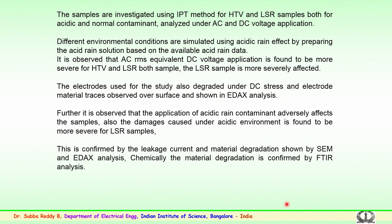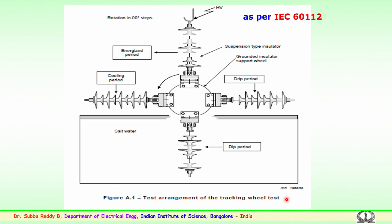This is a very important experimentation and analysis for estimating surface degradation on polymer samples. After the inclined plane and surface erosion studies, the aging of polymer or composite insulators is of utmost importance. Aging consists of three types of experimentation carried out in the laboratory. The first is the salt fog method, applied to the insulator continuously for 1000 hours while electric stress is applied and surface changes are observed.